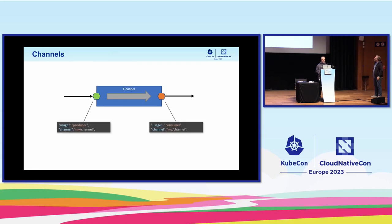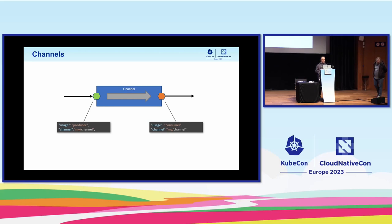The channel attribute in the endpoint definition can be used to correlate which endpoints belong to the same channel. Imagine a Kafka topic or any other queuing system — you'd have a producer endpoint on the inbound side and a consumer endpoint on the outbound side. Through this channel field, you can discover that they are attached to the same channel and correlate them.